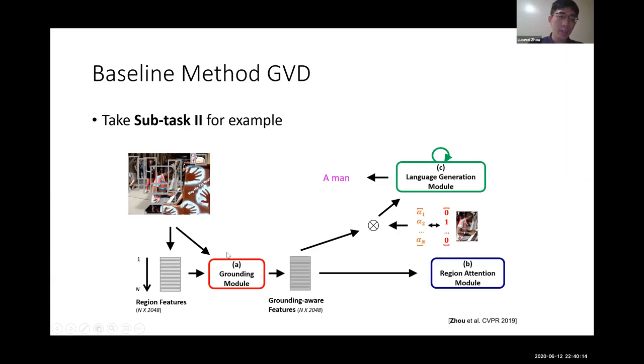We use the grounding module to locate a man back into the image. We compute the similarity score between the word embedding 'man' and the refined features, so we can localize where this object is. We apply the same supervision to these weights and repeat the process until the end of the description.